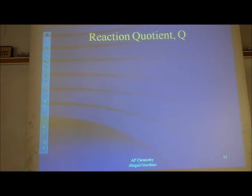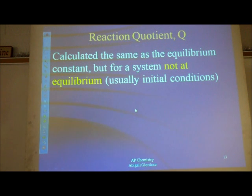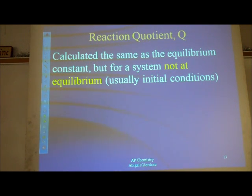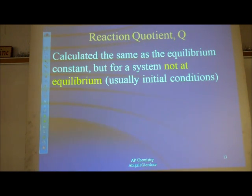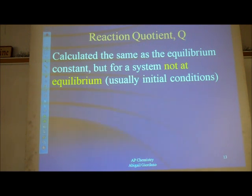There is such a thing called a reaction quotient, abbreviated with a capital Q. A reaction quotient is calculated exactly the same way that Kc would be calculated — molarities of products divided by molarities of reactants. The difference is the molarities you plug in are not molarities at equilibrium; they're molarities at some other point in the reaction, usually your initial conditions — what are the molarities of my reactants and products right as the reaction is beginning?